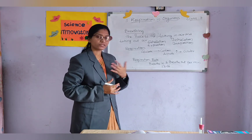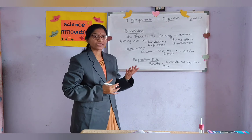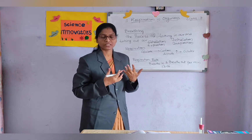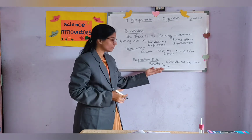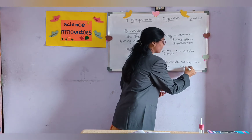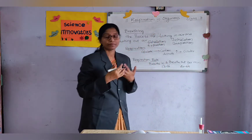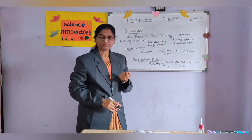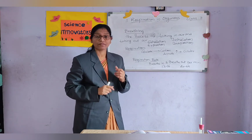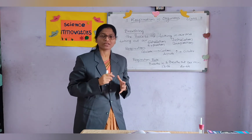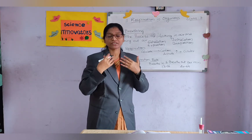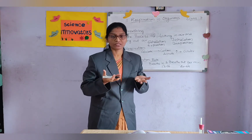The respiration rate changes with age group. In children, it takes place very fast — around 40 to 44 times they breathe in and breathe out per minute. Also, during exercise when you are running, playing fast, or climbing steps, the respiration rate will also be very fast.